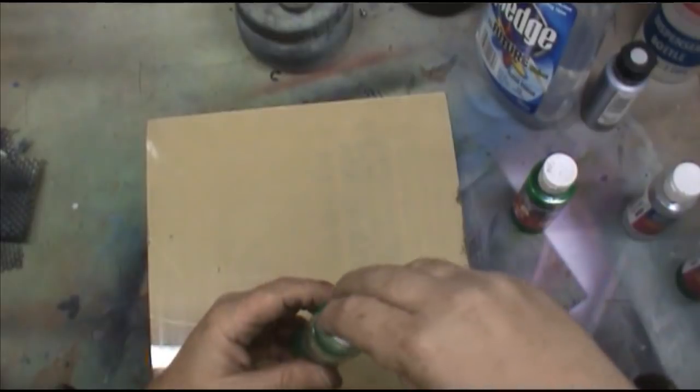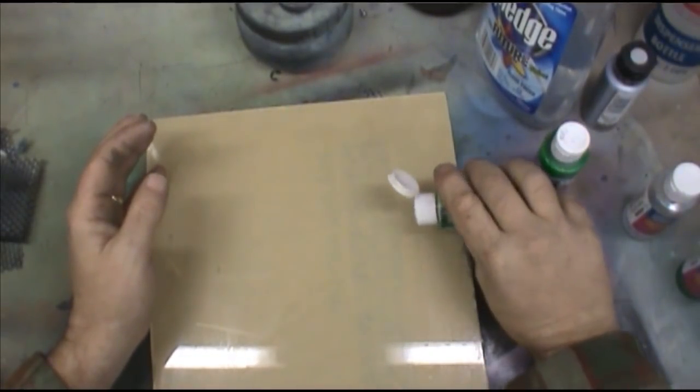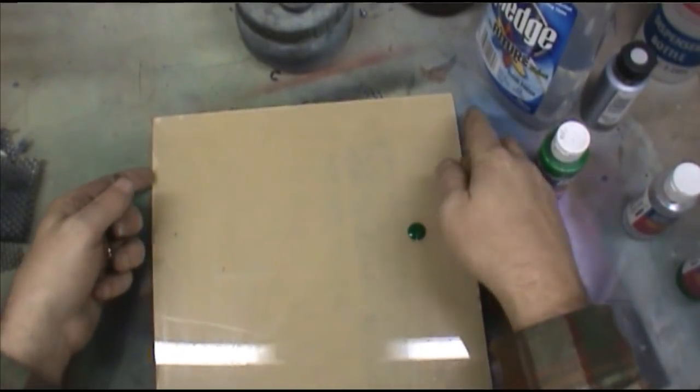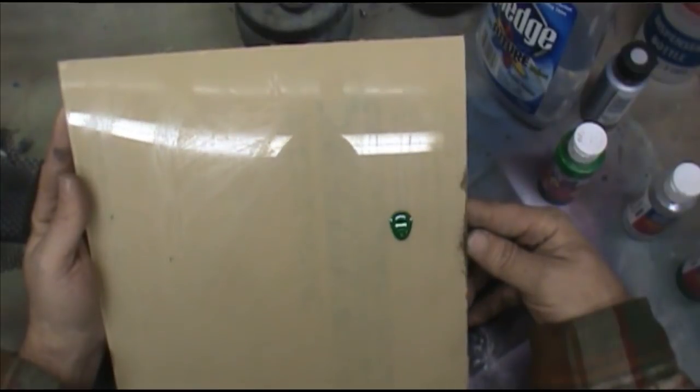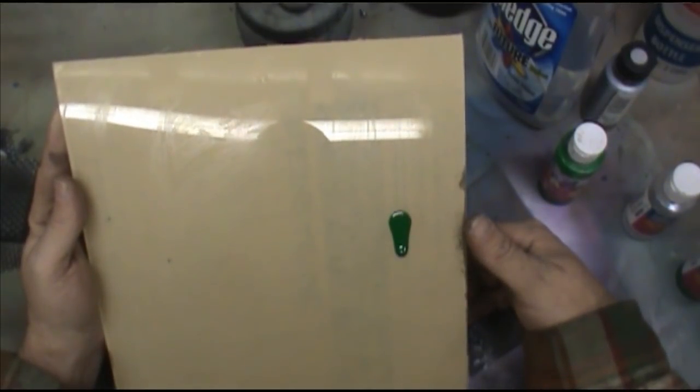They're fairly cheap, and they work really good for mixing paint and storing it because they also have flip top cap on them, just like your Parma Createx bottles. So anyways, what we've got here, unthinned. This is just fast green. Three drops there.